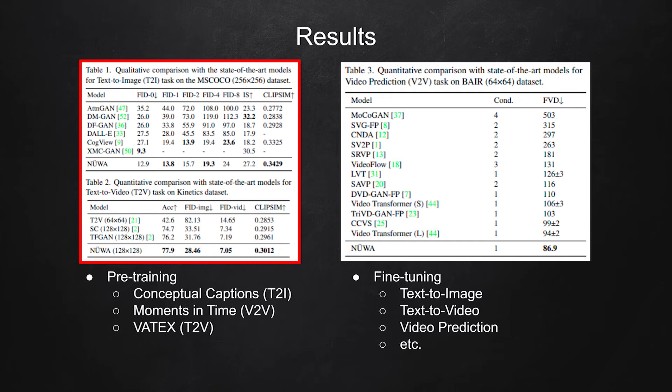In the second table, it shows the performance on text to video generation task. On this downstream task, the model achieves best performance on all the metrics.